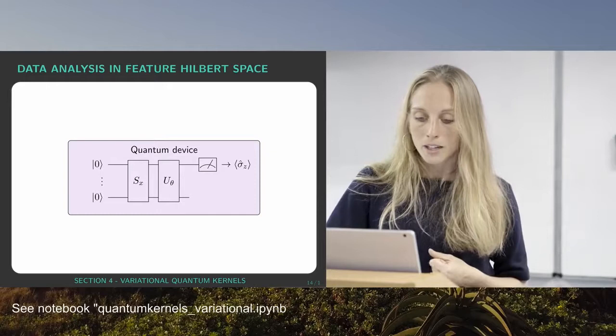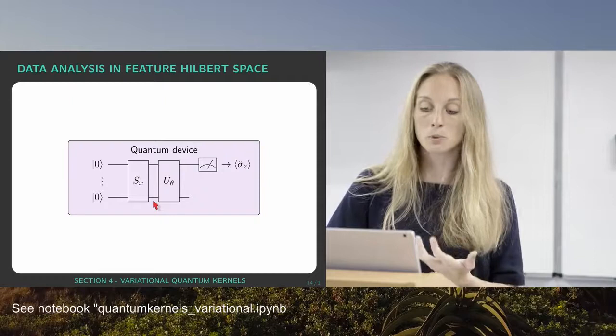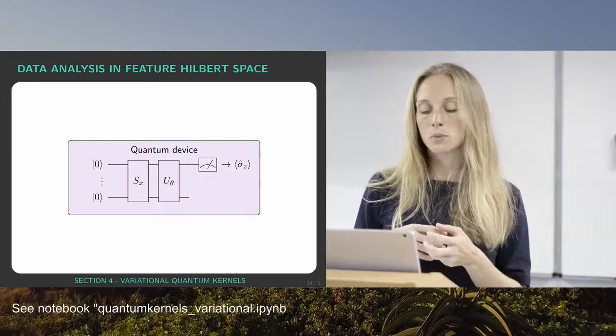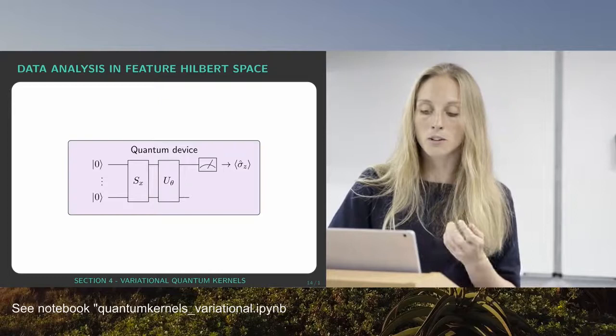We could now use the state preparation routine that encodes X into the quantum state here. So at this stage our quantum state of this whole register will be actually the quantum feature state. And now instead of doing this with another part of the subsystem and computing inner products, we can actually use a variational circuit as a classifier, which means the circuit depends on some parameters theta and I can train the parameters theta to give us good results.